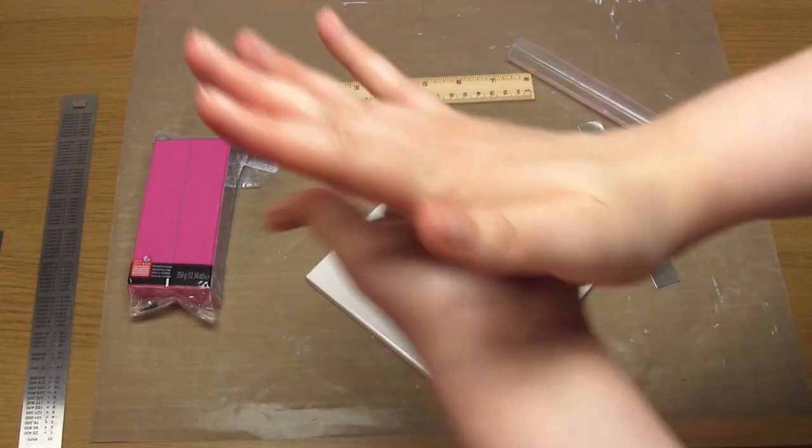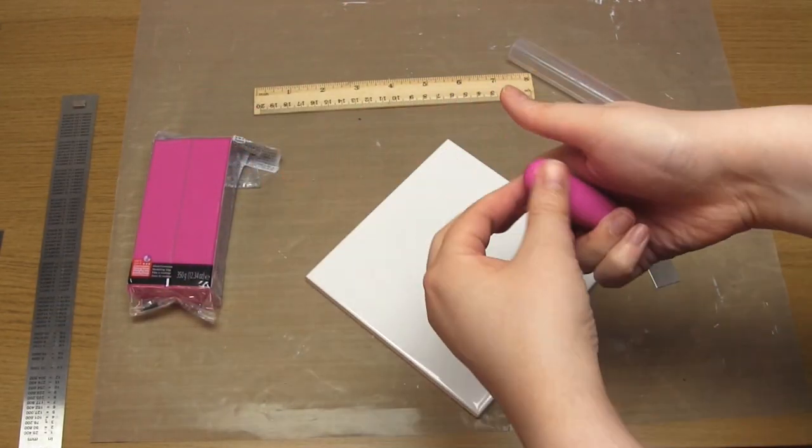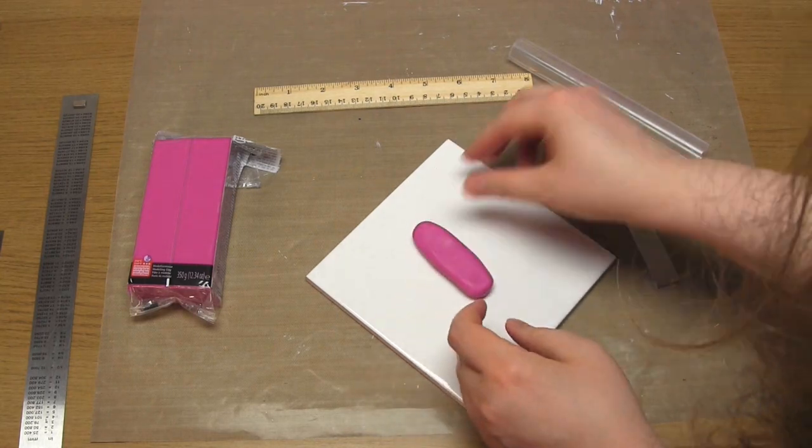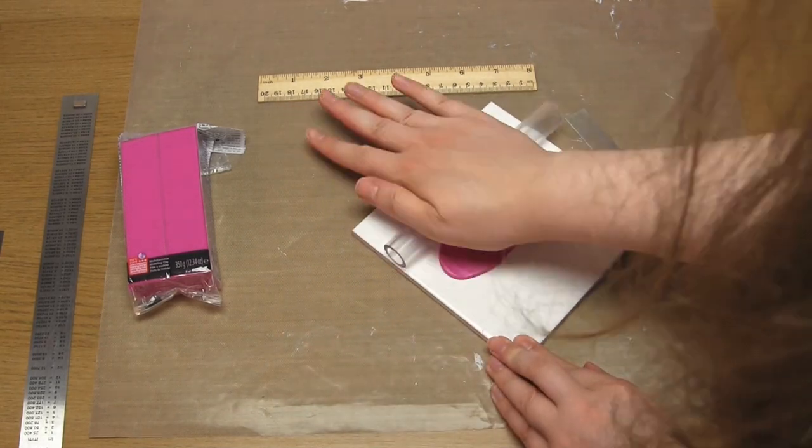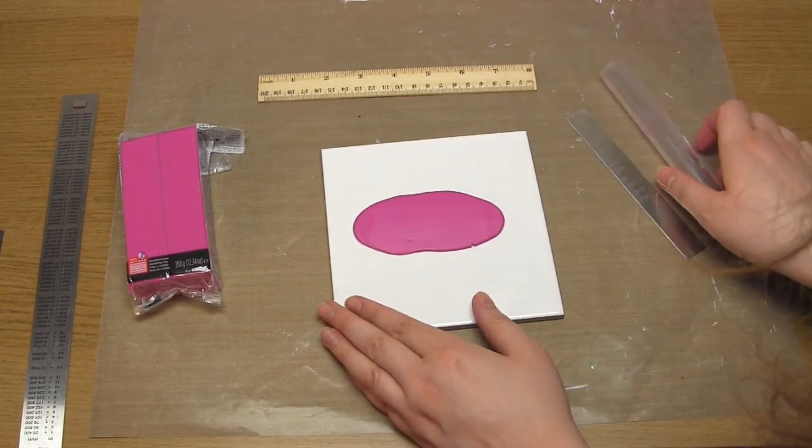You then need to roll this clay out into a sheet that's one or two millimeters thicker than the magnets you're going to use. My sheet of clay was four or five millimeters thick.